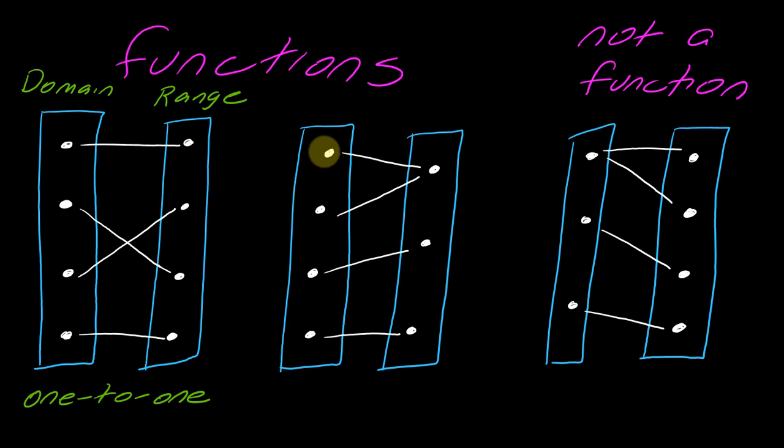If I were to look here, I have two different things in the range going to, or sorry, two different things in the domain going to the same thing in the range. So this would violate that one-to-oneness.